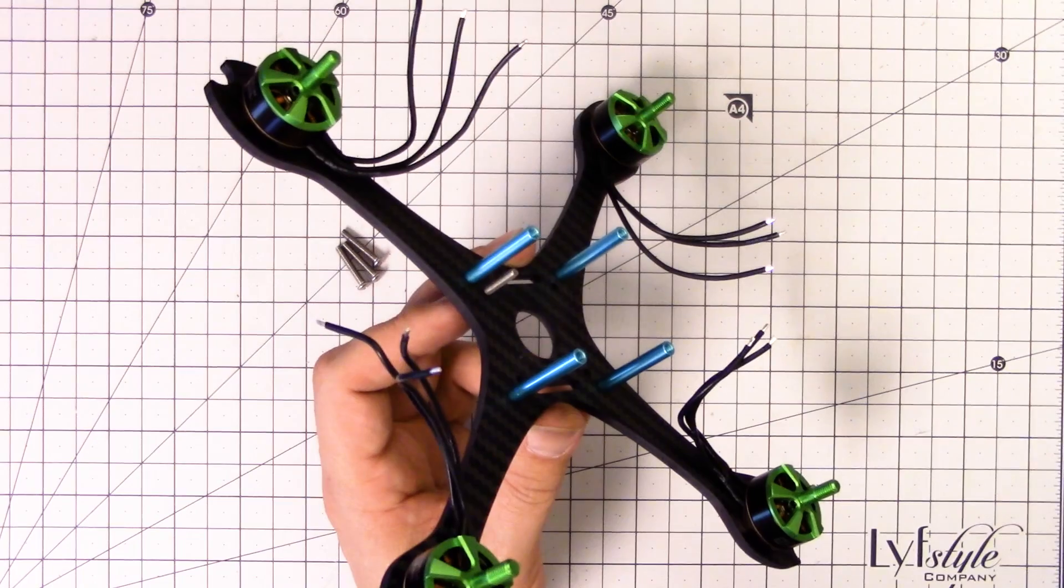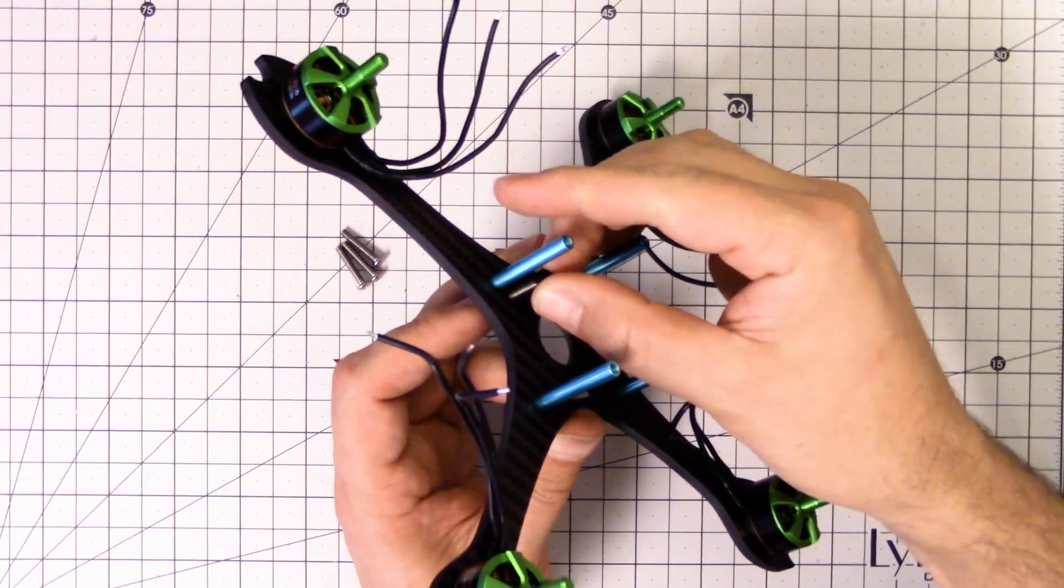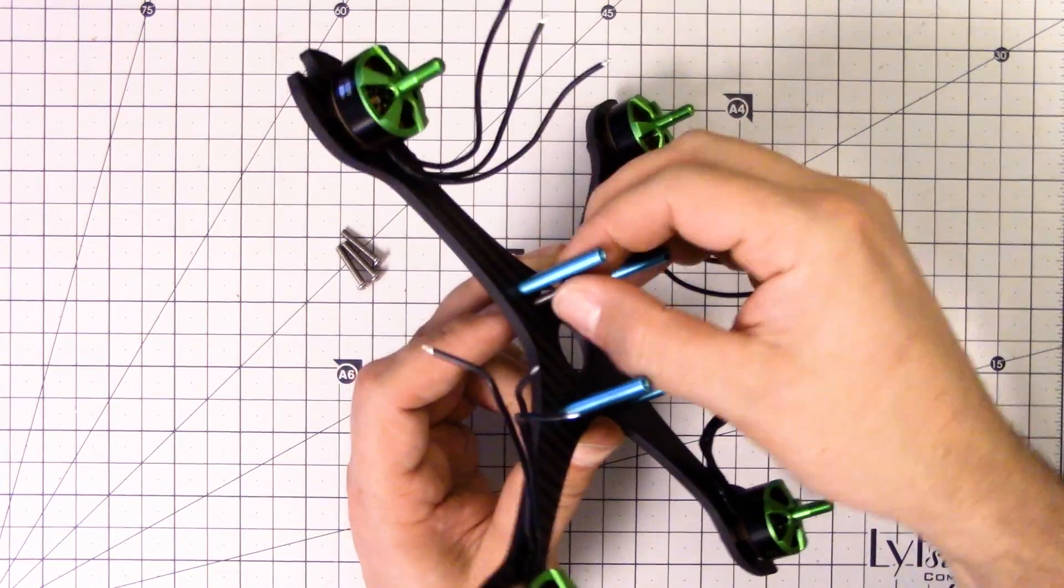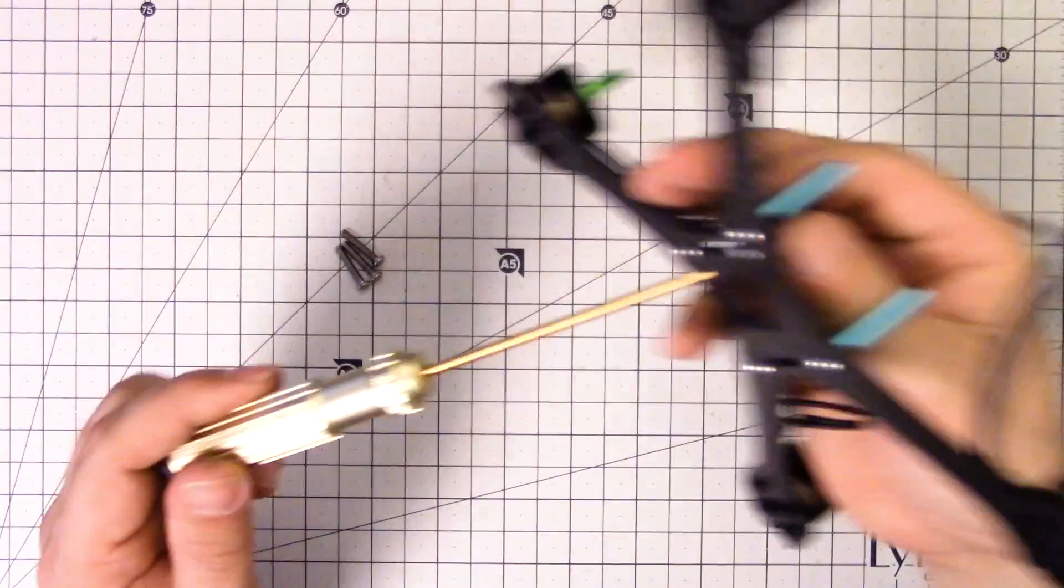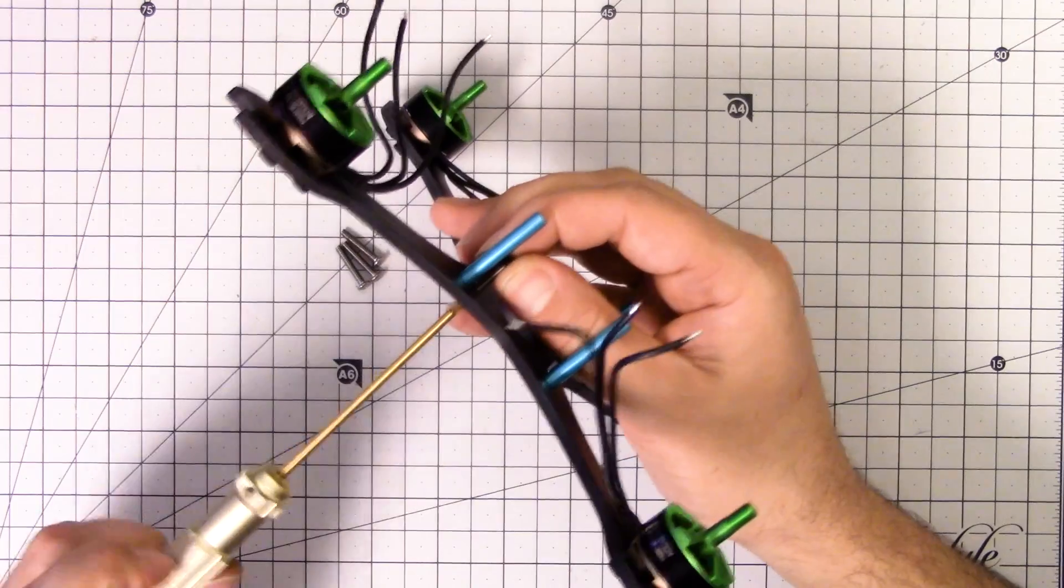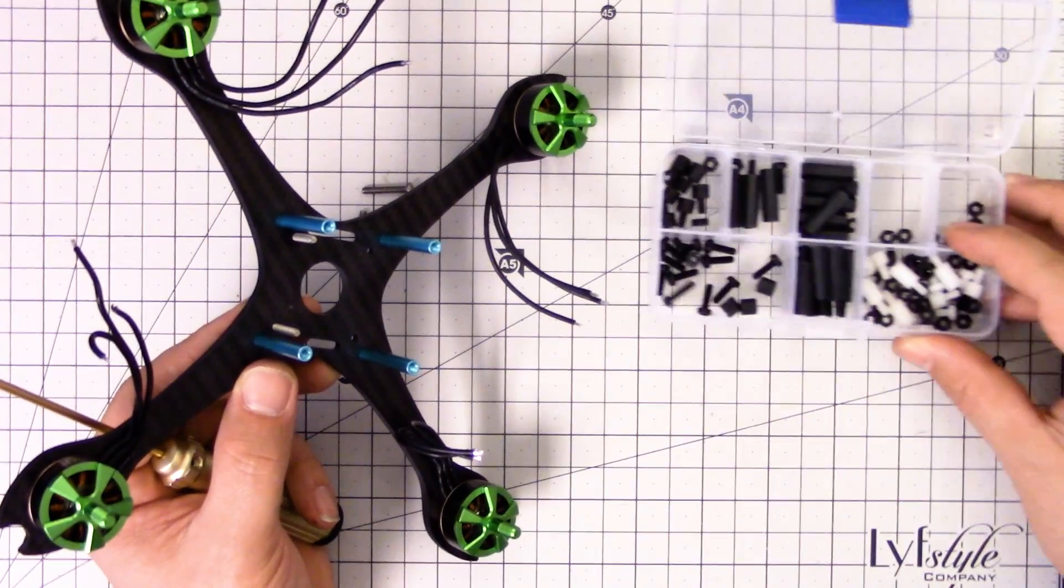I'm going to take some nuts and I'm going to just put them on here and this will act as a standoff for the bottom board and it'll also hold the screws into place so they don't fall out while I'm working. I'm working off of an assortment of M3 standoffs.